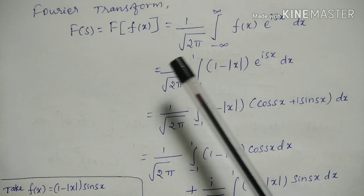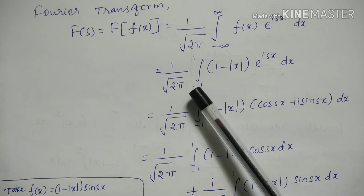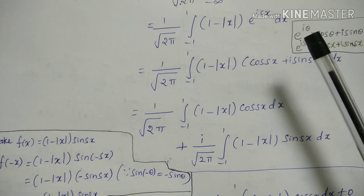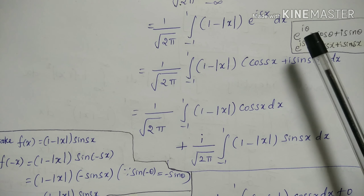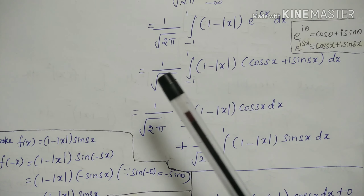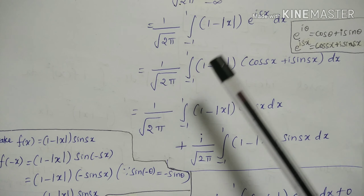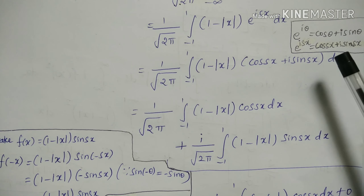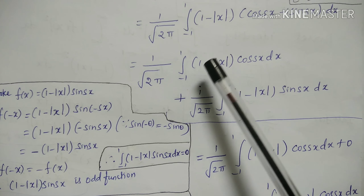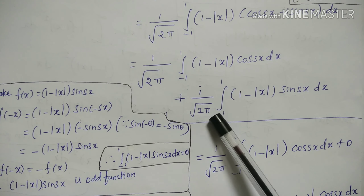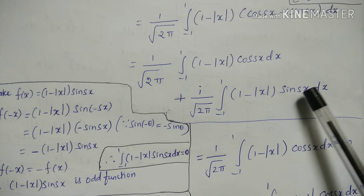Substituting f(x), that equals (1/√(2π)) · integral from −1 to 1 of (1 − |x|)·e^(isx) dx. Using e^(iθ) = cos θ + i sin θ, we get e^(isx) = cos(sx) + i·sin(sx). So the expression becomes (1/√(2π)) · integral from −1 to 1 of (1 − |x|)(cos(sx) + i·sin(sx)) dx, which we split into two terms: the cosine term and the sine term.